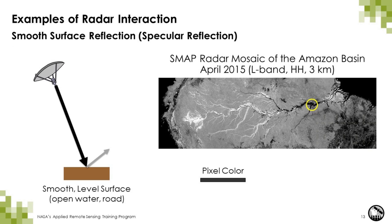For a smooth surface like an open water body — a specular reflector — the signal reflects away from the radar and the pixel appears very dark. In this example, the area circled in yellow is part of the Amazon River and as you can see it appears very dark.